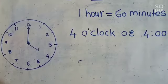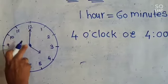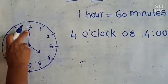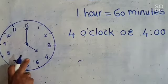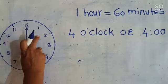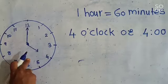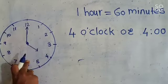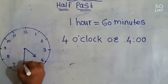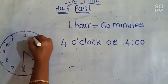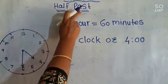Now what happens when the long minute hand moves from 12 to 6? When it moves from 12 to 6, that time we call it half past. Look — this minute hand moves from 12 to 6, and that is the time half past.